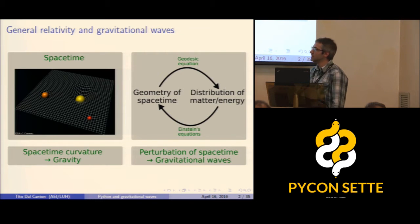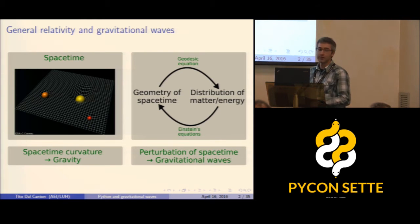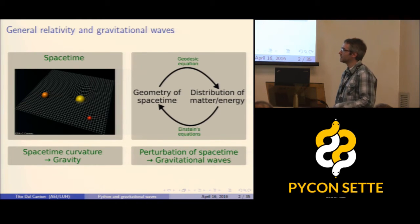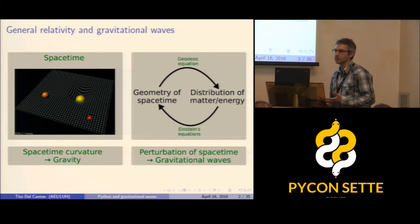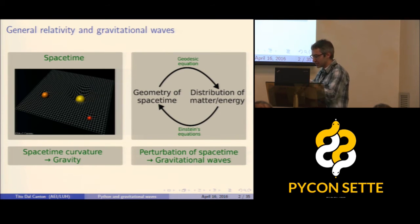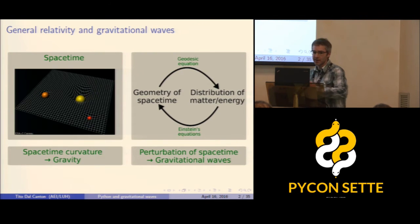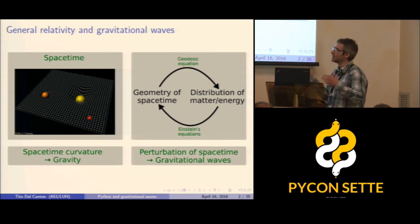General relativity has Einstein's equations, which couple the geometry of space-time to the distribution of matter and energy. The distribution of matter affects the geometry, and the geometry determines how matter and energy move — a complicated feedback loop at the center of dynamics in general relativity. Whenever we have curvature in space-time geometry, we have gravitational effects.